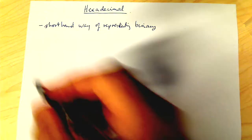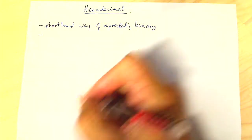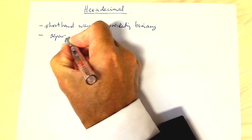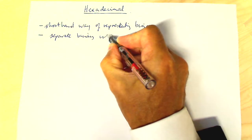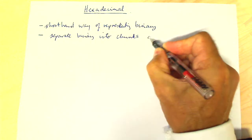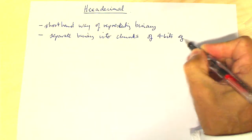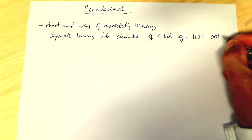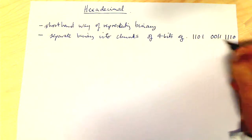And how it works is that each chunk of four bits is separated out. So we separate out our binary into chunks of four bits. So for example it might look like this: 1101 00111110. So they're chunked out into four.